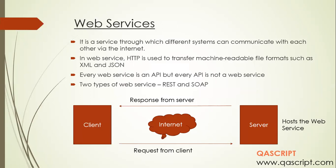Coming to Web Services API — it is a service through which different systems can communicate with each other over the Internet. In web services, the protocol used is HTTP, and it uses machine-readable file formats such as XML or JSON to transmit information between the client and server. An important point: every web service is an API, but not every API is necessarily a web service.